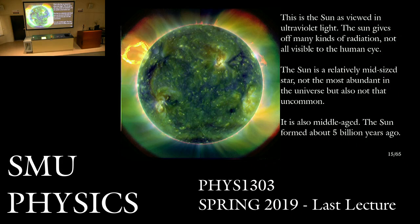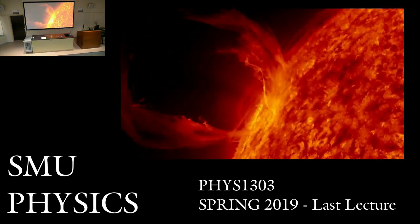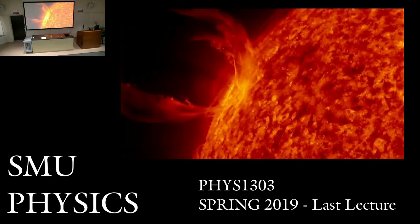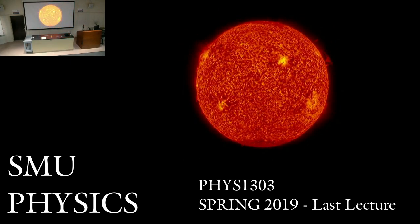Our sun is a relatively mid-sized star — not the most abundant kind, but not that uncommon. It's middle-aged, having formed about five billion years ago, and based on everything we know about stars, it will die in about five billion years. Here is one of those coronal mass ejections — these magnetic storms are at least the size of planet Earth; this one is probably more like 10 to 20 Earths in size. It takes tens of days for the sun to make one rotation, so you can very slowly watch these storms move over the photosphere as the sun spins. The sun is really a vast playground for all kinds of forces and mechanics.